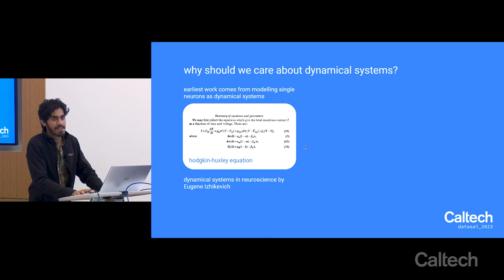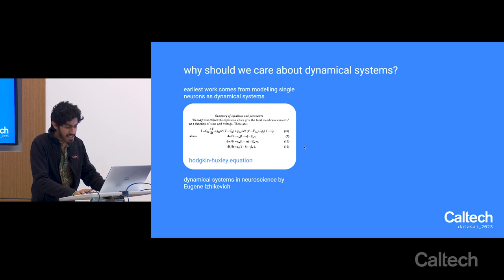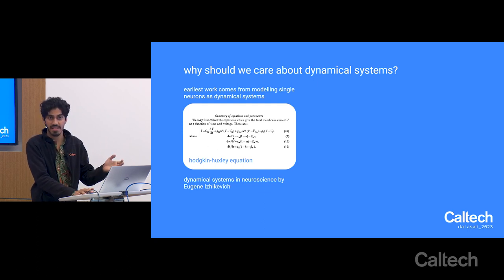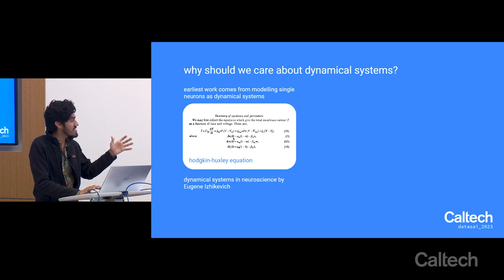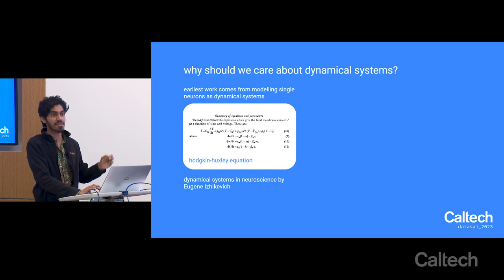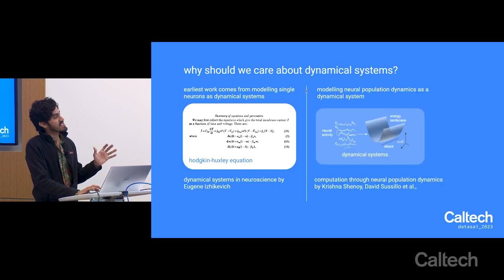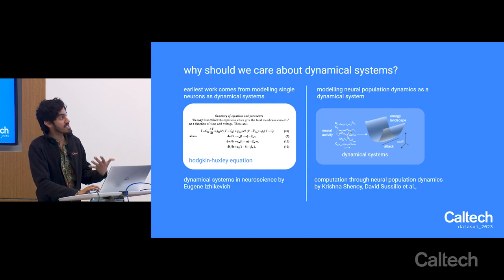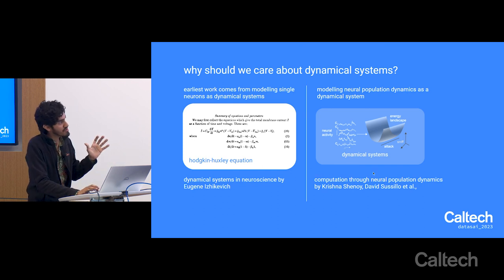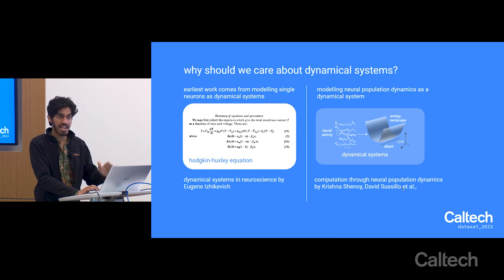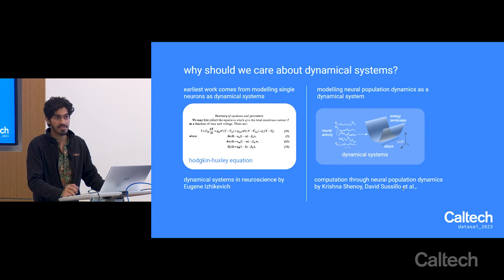Why should we care about these at all? Thinking of neural systems as dynamical systems has a very rich legacy. When Hodgkin and Huxley made equations describing the evolution of membrane potential, those were dynamical systems capturing conductances. There's a whole textbook by Eugene Izhikevich called Dynamical Systems in Neuroscience that expands on modeling single neurons as dynamical systems. There's also an emerging field where population dynamics can be modeled as dynamical systems—the paper 'Computation through Neural Population Dynamics' by the late Krishna Shenoy and David Susillo is a kind of field bible.